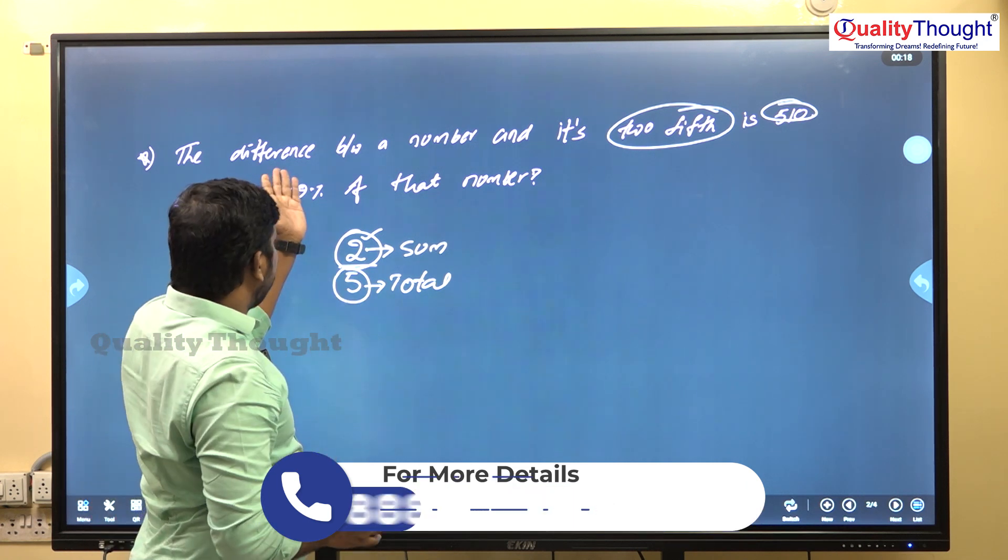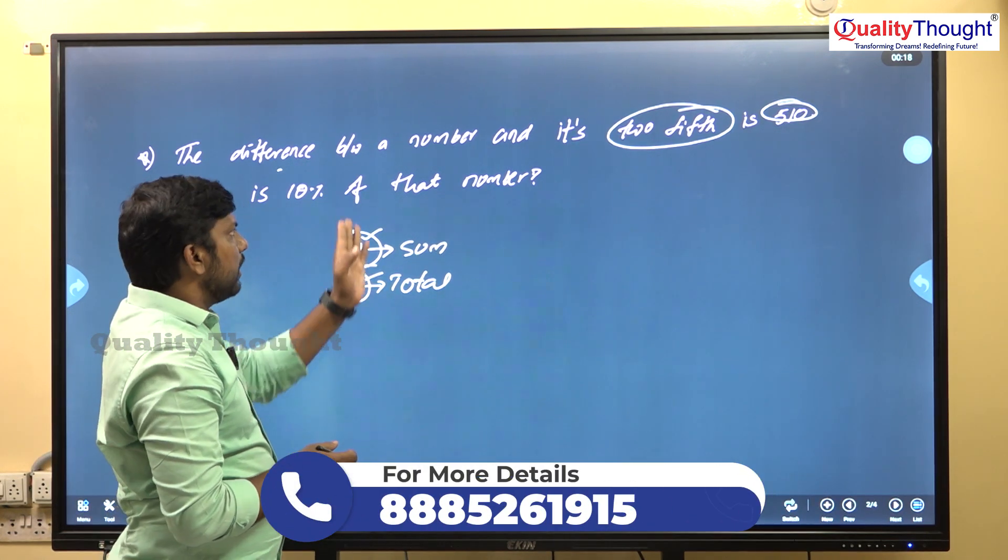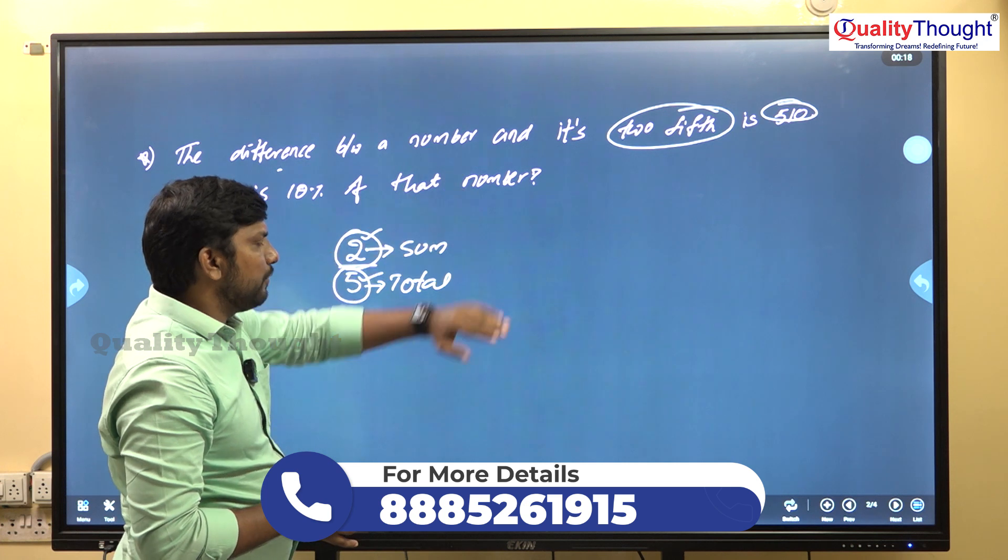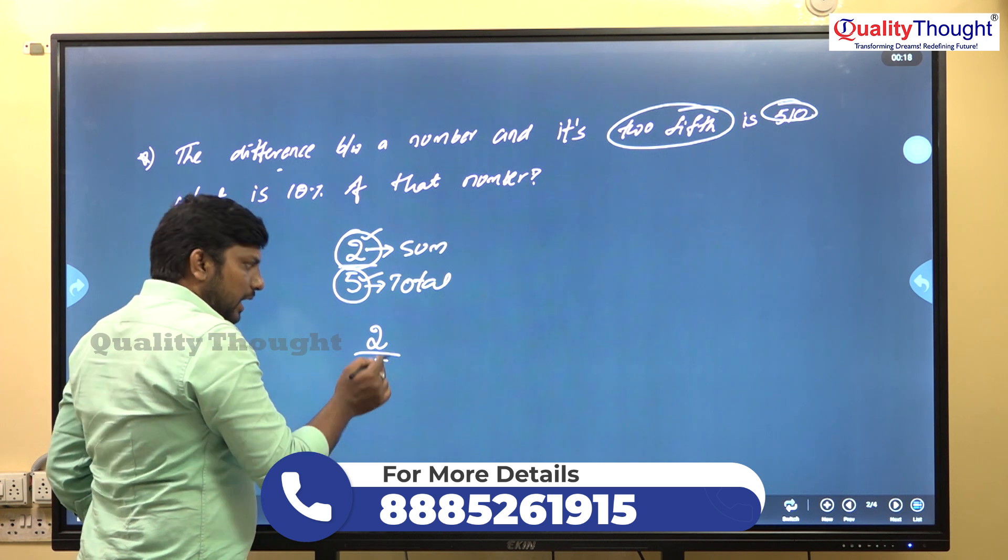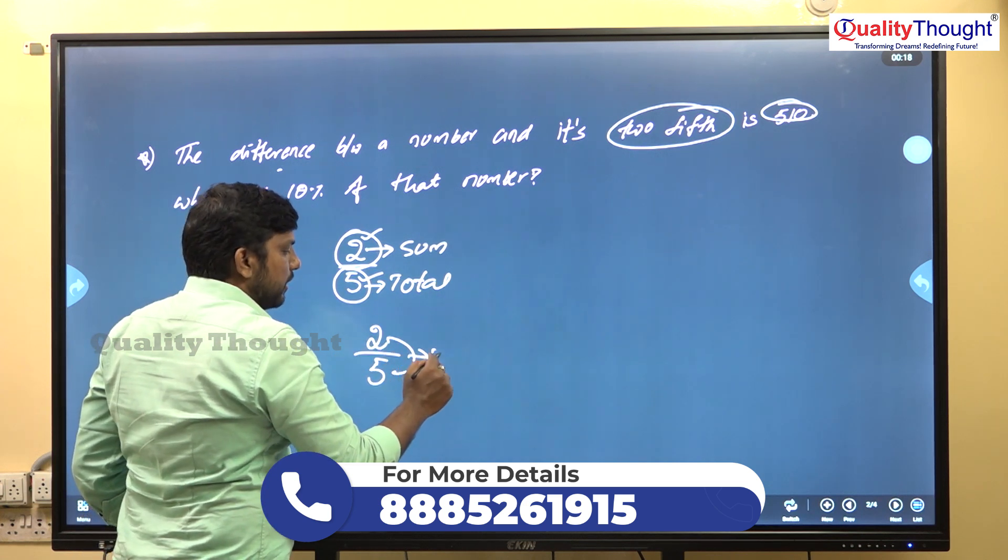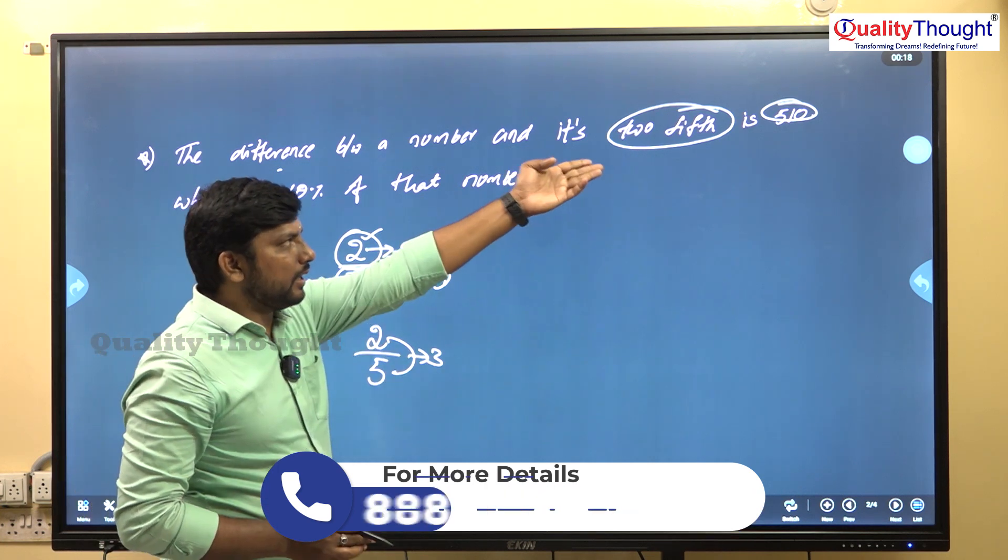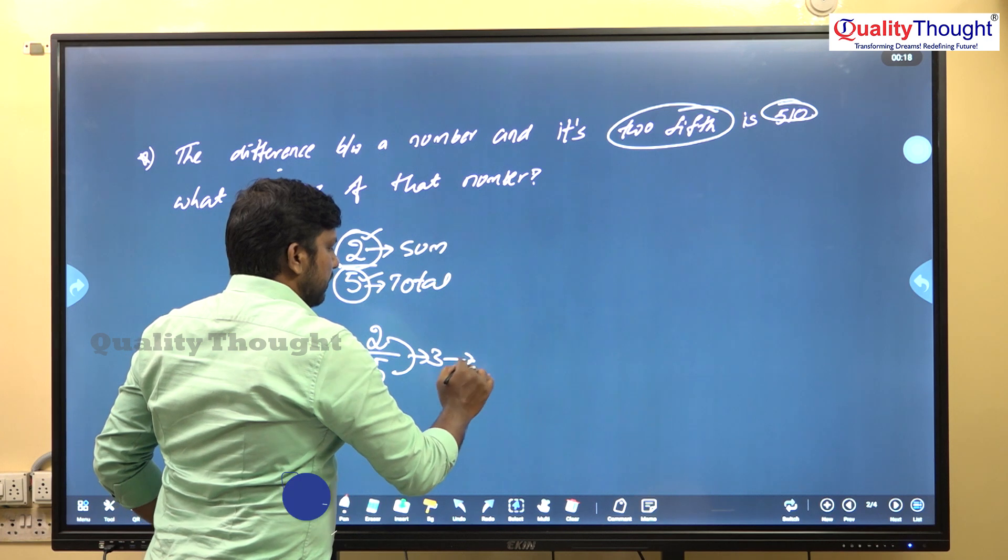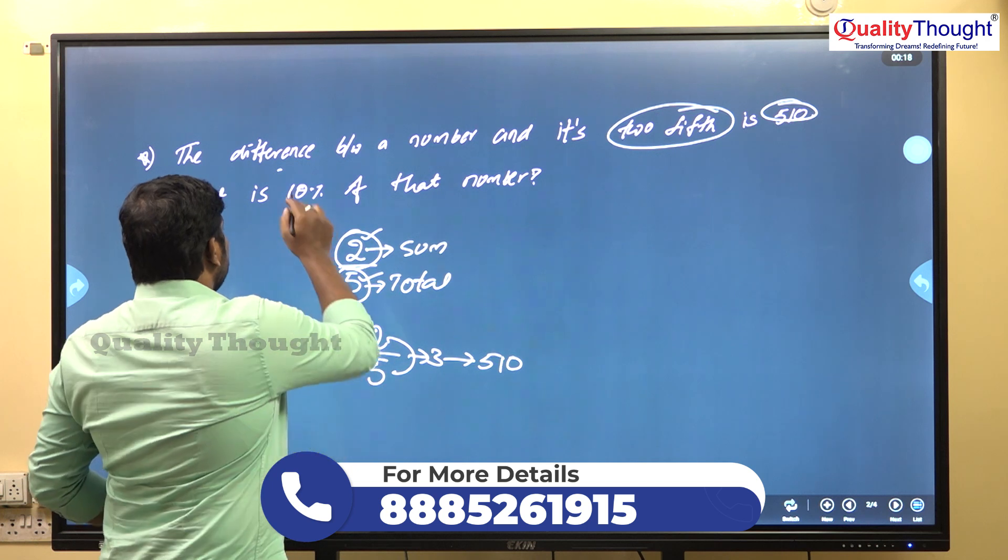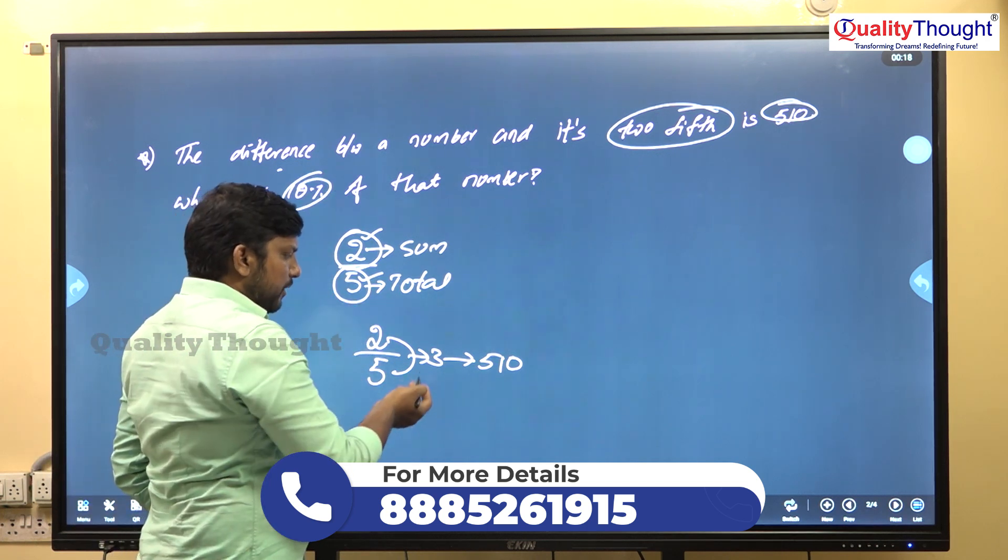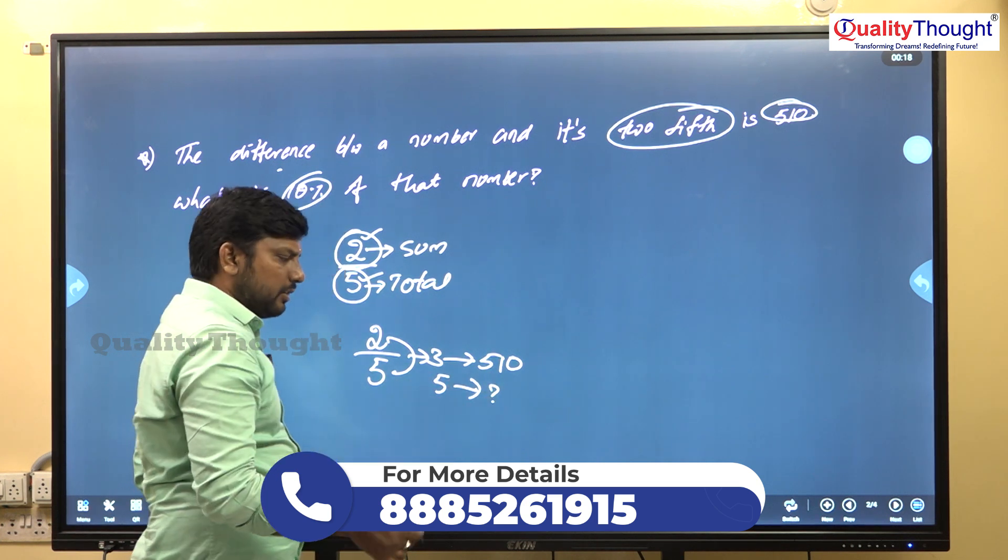If the question says the difference between a number and its 2/5th, in 2 by 5, the difference will be 3 parts. Clear? The difference will be 3 parts. These 3 parts equal 510 rupees. So 3 parts equals 510, then find the number.